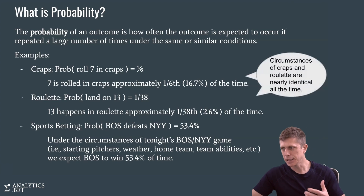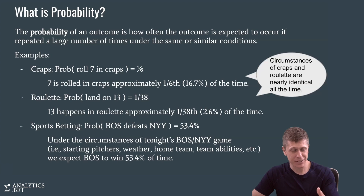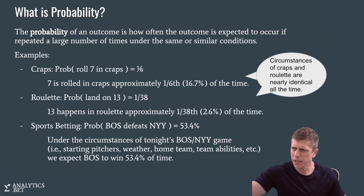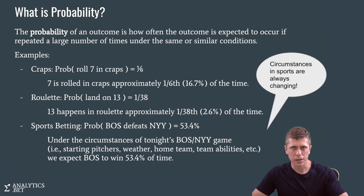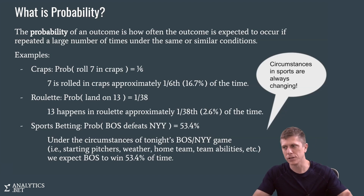The circumstances of craps and roulette are nearly identical all the time — we can imagine the wheel being pretty much exactly the same. It's not different in any way that we can tell. But in sports betting, the circumstances are always changing in very obvious ways. The starting pitchers are different every game, the starting lineup might be different — it's always changing and so on and so forth.